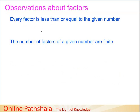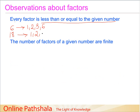Another observation is that every factor is less than or equal to the given number. For six, the factors are one, two, three, and six — all at most equal to six. For 18, the factors are one, two, three, six, nine, and eighteen. In both cases, the factors are less than or at most equal to the given number, which is intuitive: you can only divide a number by something less than or equal to it and get zero remainder.